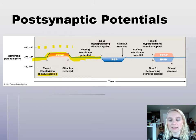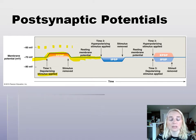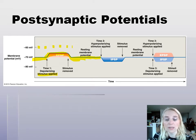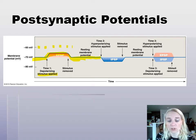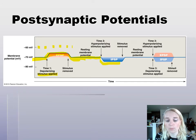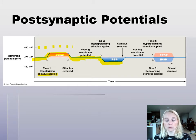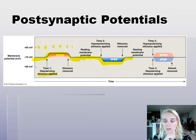Then in the next stimulus, maybe a different neuron is communicating to this postsynaptic cell — and this time the neurotransmitter causes the opening of potassium channels. Potassium channels let potassium out, so we're losing positive charges and we hyperpolarize until the stimulus is removed. The sodium-potassium pump takes us back to resting potential.